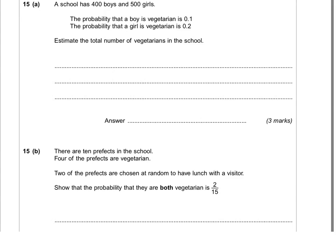Okay, so first question: a school has 400 boys and 500 girls, the probability that a boy is vegetarian is 0.1, the probability that a girl is vegetarian is 0.2.